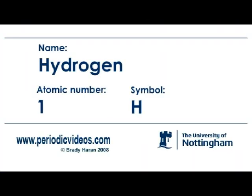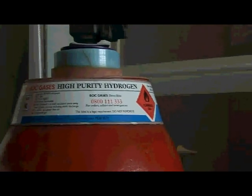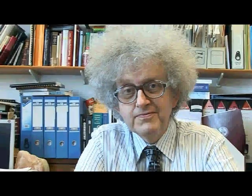Hydrogen is the lightest element and it's also a very abundant element. You find it throughout the universe — it's in stars, in the space between stars, and of course on Earth.